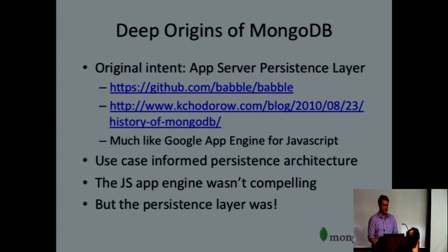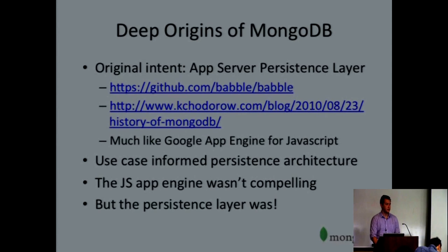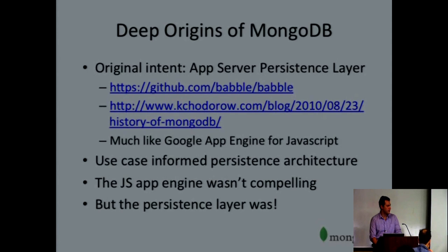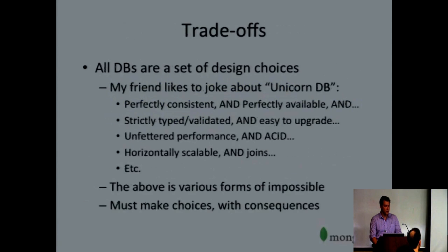If you're building an app server in JavaScript and you have JavaScript objects, presumably what you want to store in your database is JavaScript objects. The most natural way to deal with that is to restrict it to JSON. And if you're going to do that, you want an efficient encoding of JSON that you don't have to parse as text — so you end up with a binary encoding. That's how BSON came into being. As it turned out, the JS App Engine wasn't the particularly compelling part of what the early build produced, but the persistence layer was.